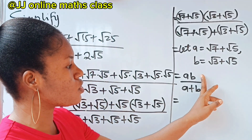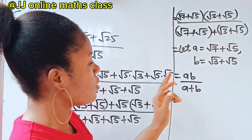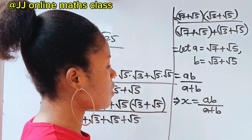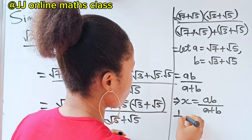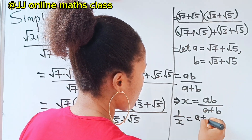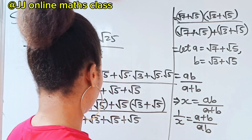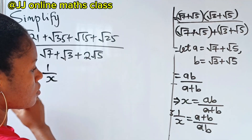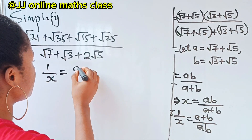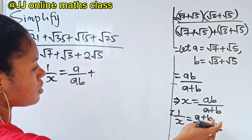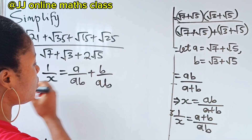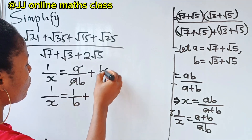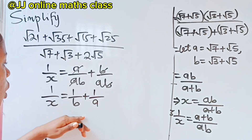Let's call the whole expression x, so x = ab/(a + b). Now let's take the inverse: 1/x = (a + b)/(ab) = a/(ab) + b/(ab) = 1/b + 1/a.